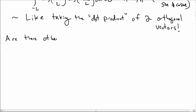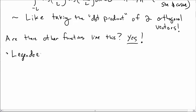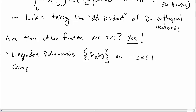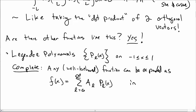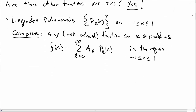Are there any other functions that are complete and orthogonal like this? It turns out yes. One set is the Legendre polynomials, P_L(x), defined for x between −1 and 1. Legendre polynomials are complete: you can write any well-behaved function as a sum f(x) = Σ A_L P_L(x) from L = 0 to infinity, valid in the region between −1 and 1.